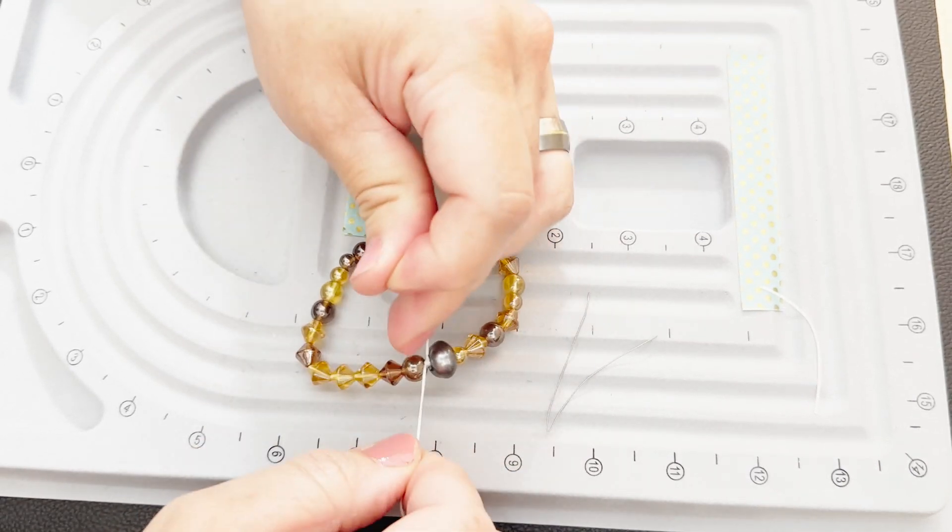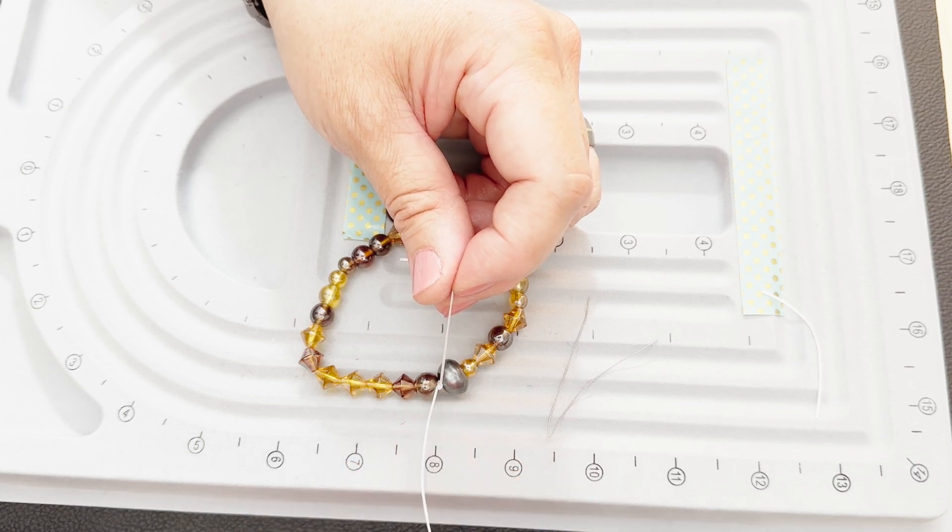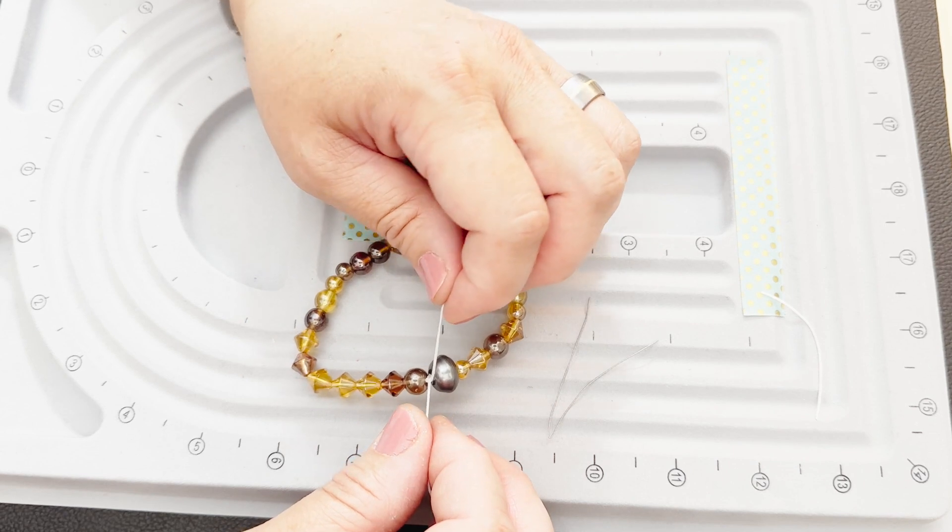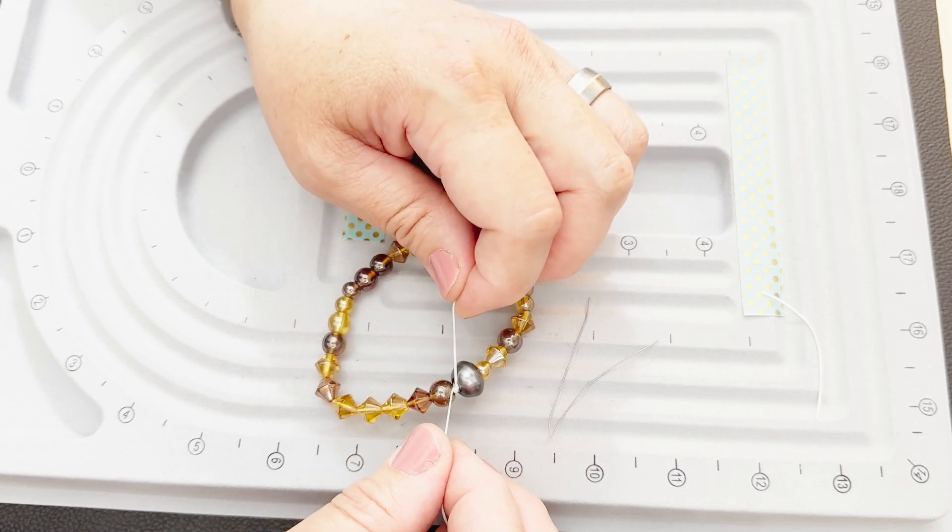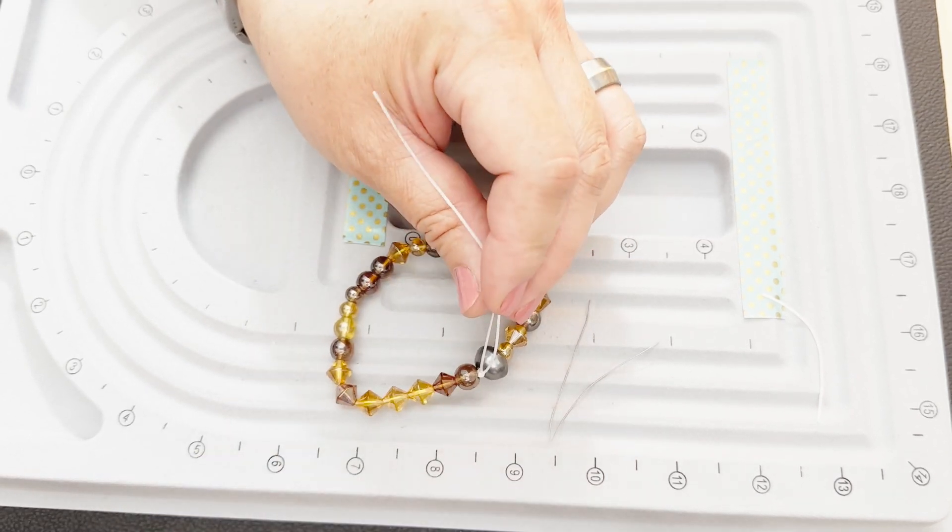And some people will put a dab of glue there to hold it. You don't have to do that with this method. You can, if you like, if you want some extra security, you can put a dot of crazy glue or some other kind of glue there. But if you don't have it, don't worry about it. It's going to work just fine.